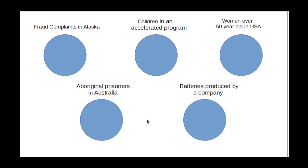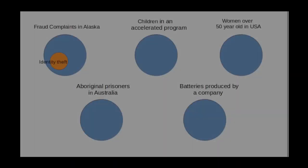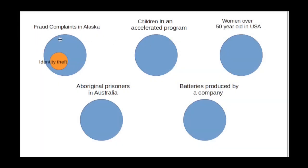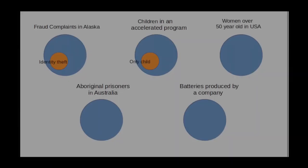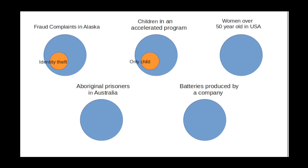There are a number of different variables that could be associated with any one of these populations. Suppose the variable we're concerned about with fraud complaints is whether the complaint was for identity theft. In the children in the GT program, the variable might be whether a student in the program is an only child or not. For women over 50 in the United States, we might be interested in knowing whether they are having regular mammograms — a health issue.